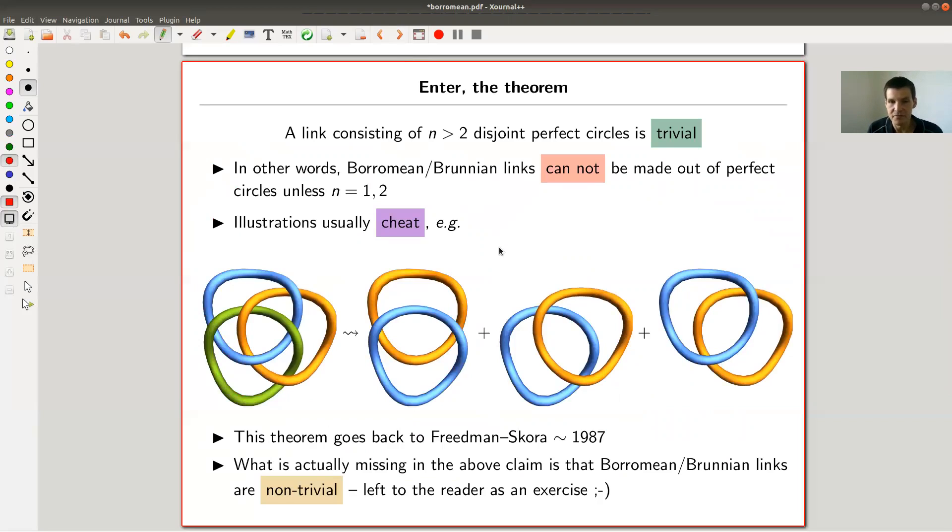The question is, can you do it for more than two components? This is exactly the theorem where I wasn't sure what the name is, but a very nice theorem. It's a no-go theorem, it says no you can't. The formal statement is something like: a link consisting of n greater than two disjoint perfect circles has to be trivial. Of course, I could draw disjoint perfect circles just right next to one another, so that's boring, that's trivial. But I can't interlace them, that's basically what this theorem is saying.